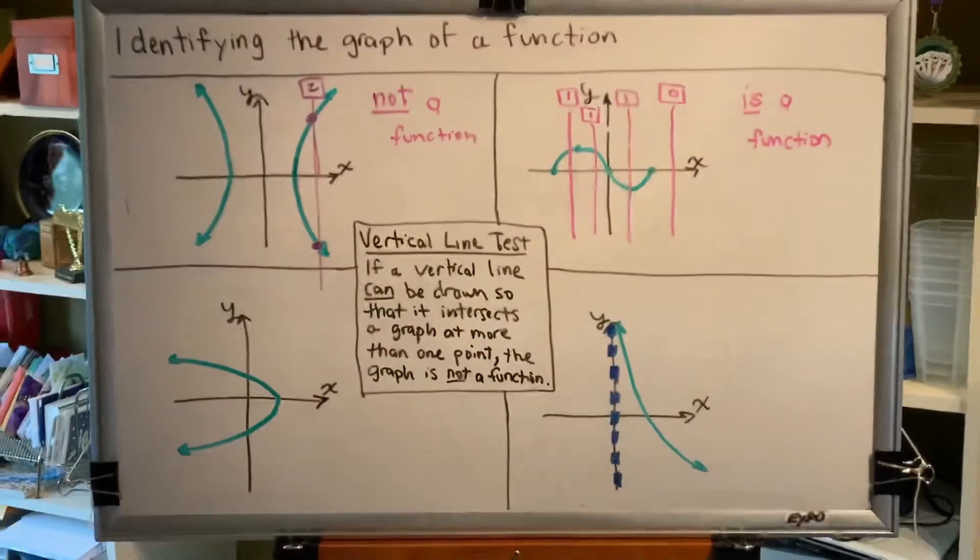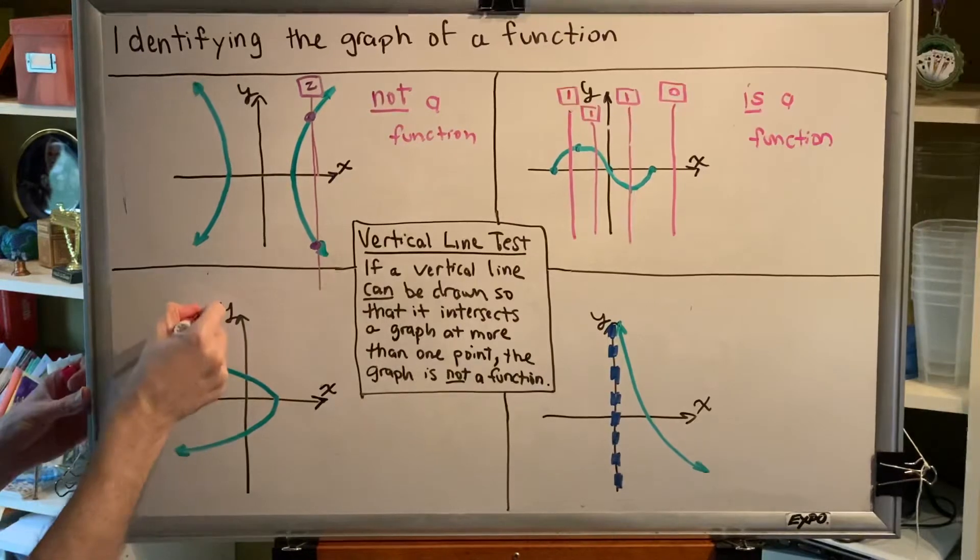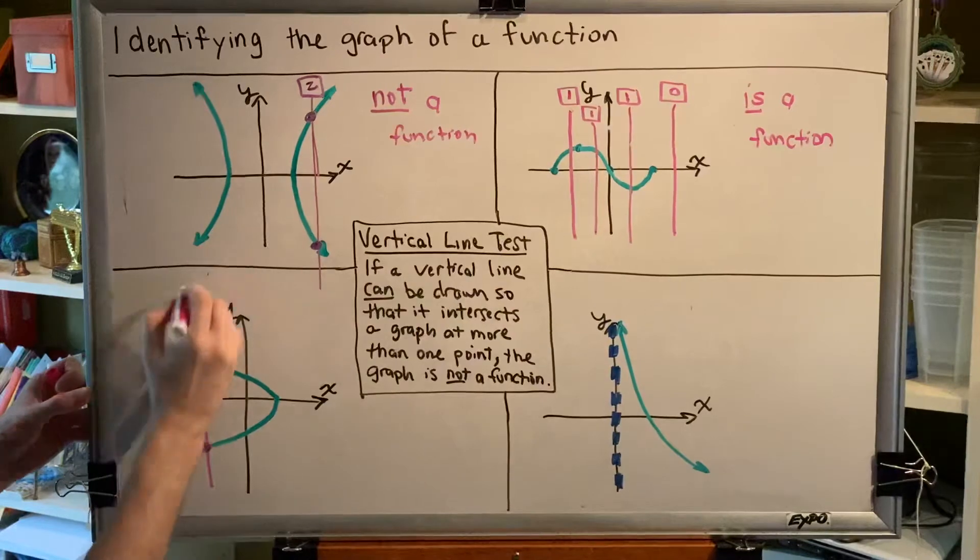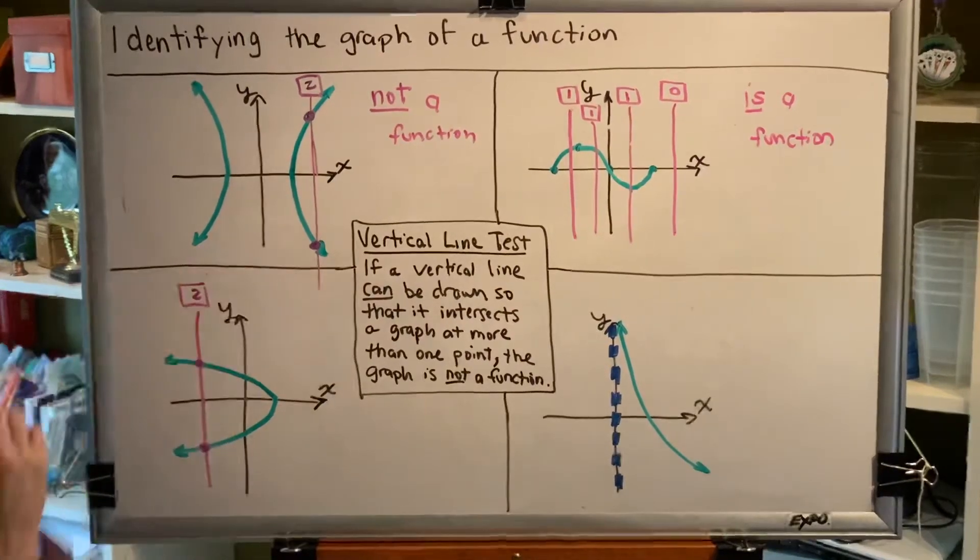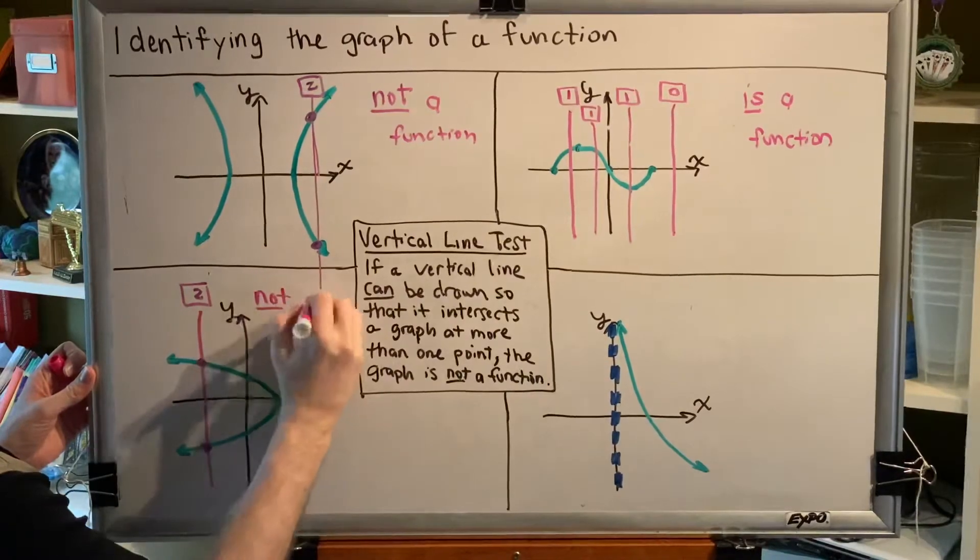Next graph. Is this relation a function? The answer is no. Here is a vertical line that intersects it at one, two, which is more than one point. So this is not a function.